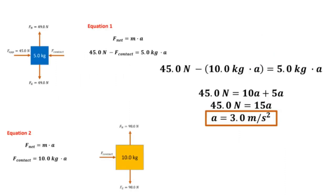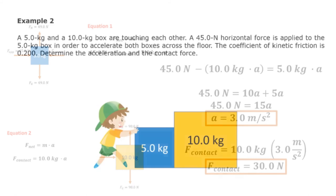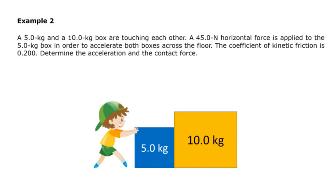Substituting Equation 2 into Equation 1, we get: 45 newtons minus 10a equals 5a, so 45 newtons equals 15a, and finally we get an acceleration of 3 meters per square second. Now solving for the contact force by substituting the acceleration into Equation 2, we get a contact force of 30 newtons.